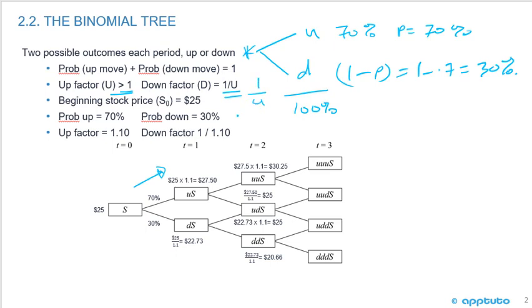In this example, we're going to look at a beginning stock price at time S0 of $25. The probability going up is 70%, probability going down is 30%, and these sum to 100%. The up factor is 1.1.